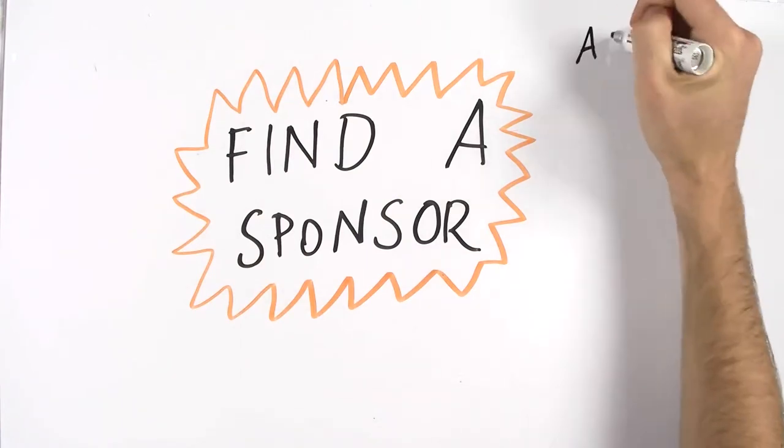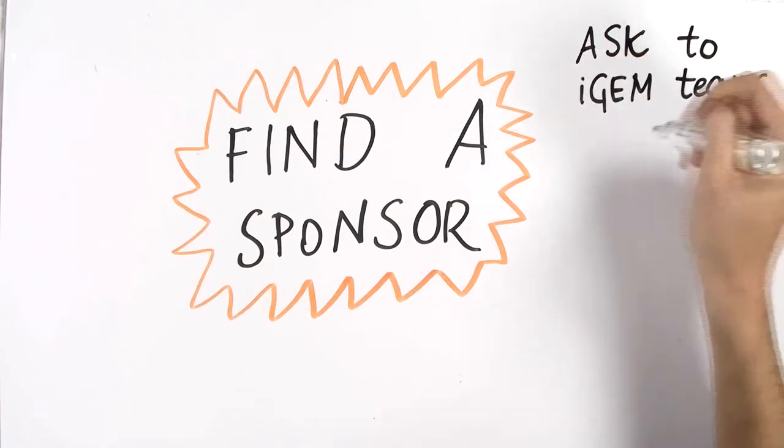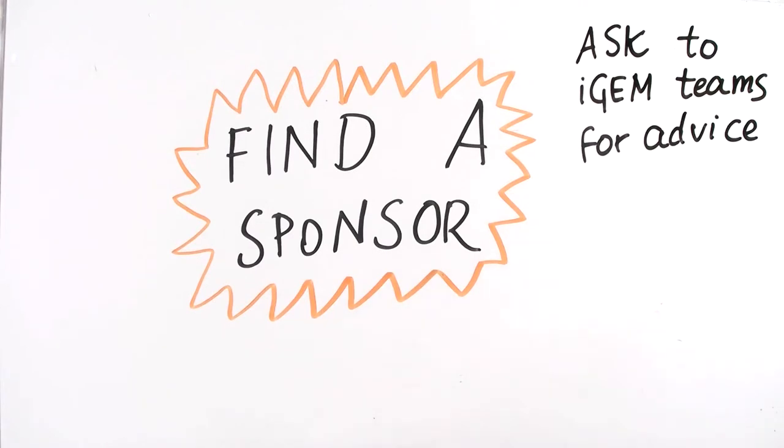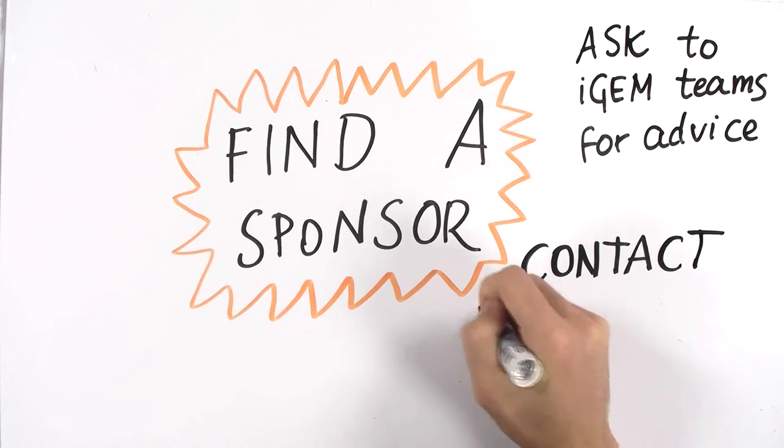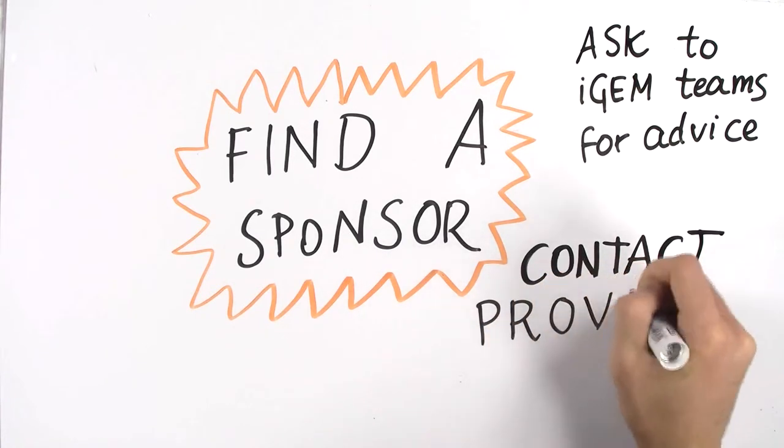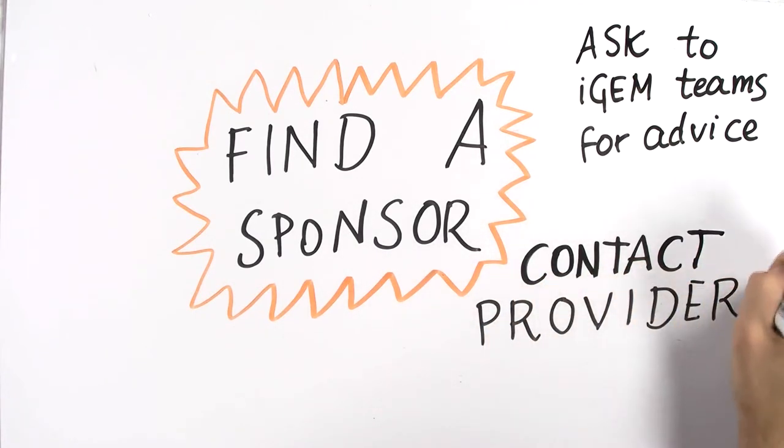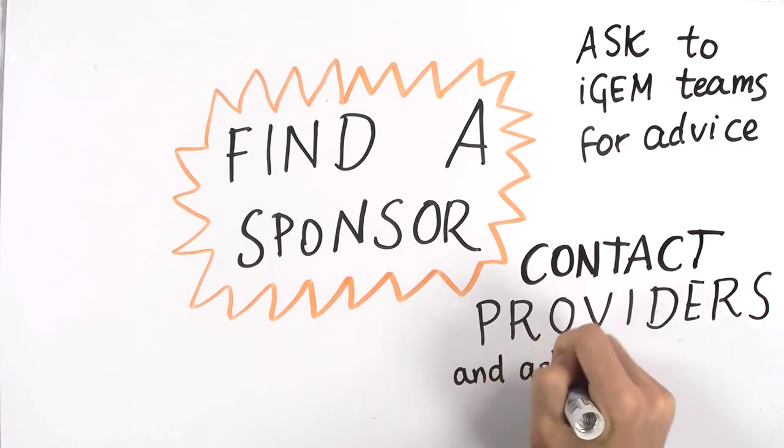To get some information on how to find a sponsor, contact existing iGEM teams in your area and ask them how they accomplish this task. Contact the companies you are going to order from. They might offer you a discount or some products for free in order to help the community and to help education.